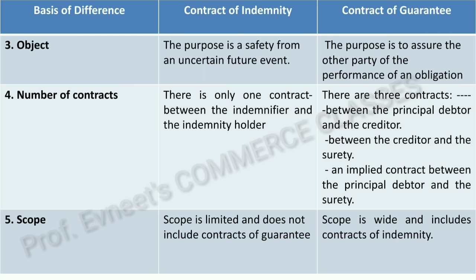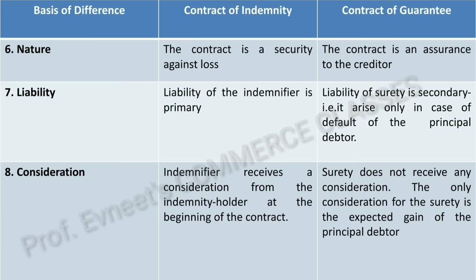The scope of Contract of Guarantee is wider and includes Contract of Indemnity within it — because after the surety makes payment on behalf of the principal debtor, the surety covers their own loss by recovering from the principal debtor, and also covers the creditor's loss by paying them in time. So a Contract of Guarantee inherently includes elements of indemnity. Sixth — nature: a Contract of Indemnity is a security against loss; a Contract of Guarantee is an assurance to the creditor that if the principal debtor does not pay, the surety will pay.